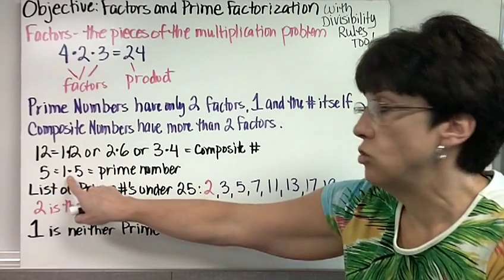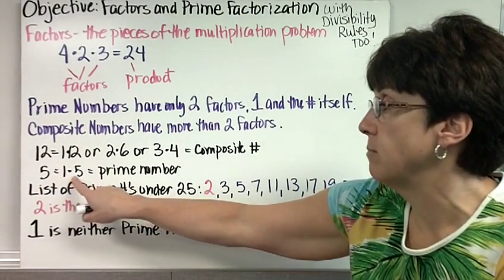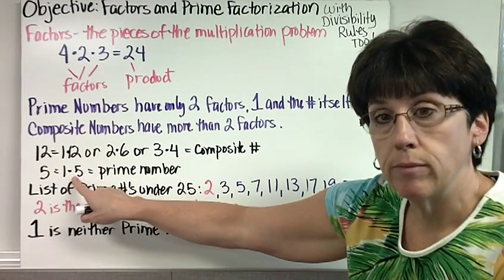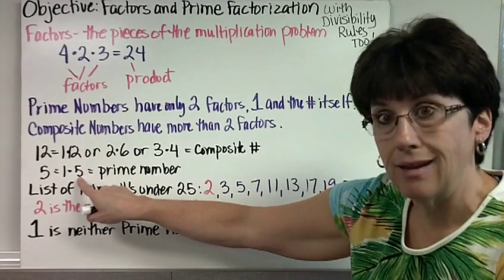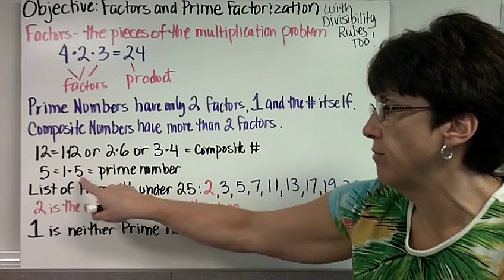5, the only two whole numbers you can multiply together to get 5 are 1 times 5. Therefore, it's a prime number because the only factors are the number 1 and the actual number we are factoring, 5.